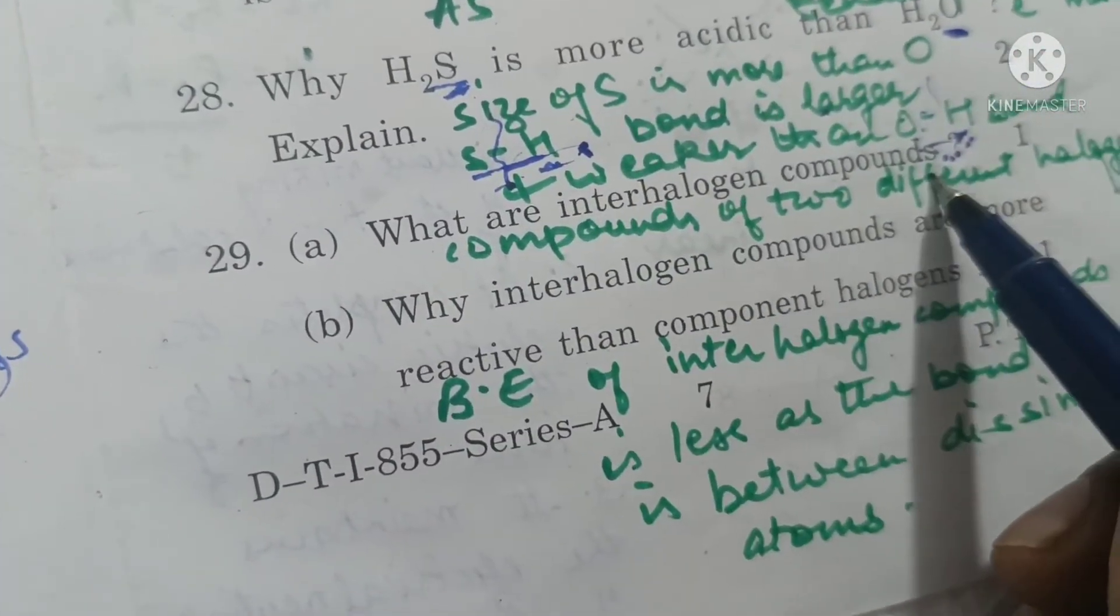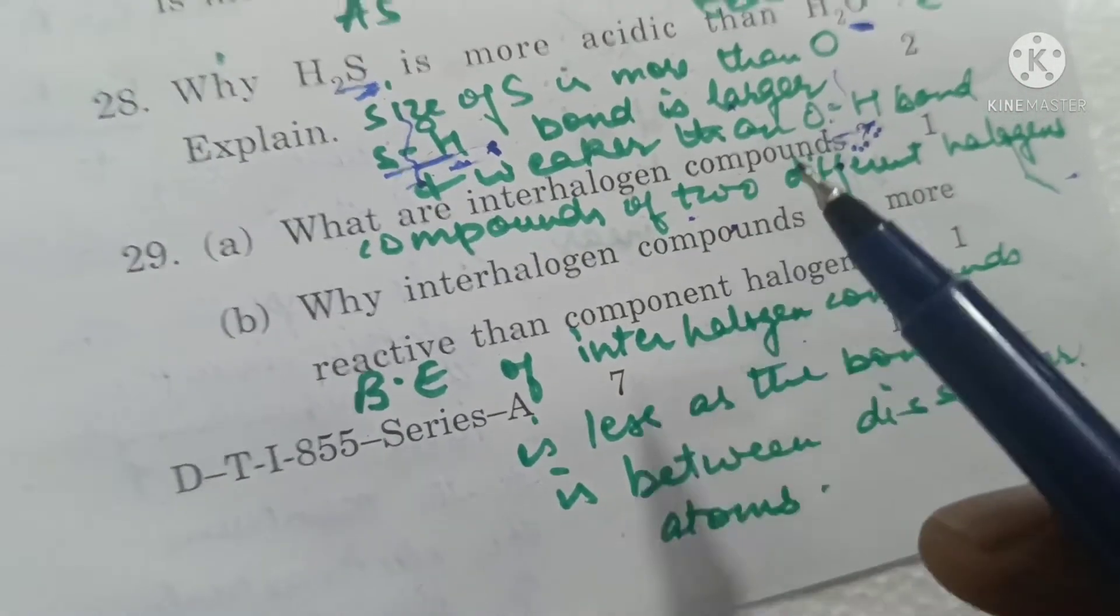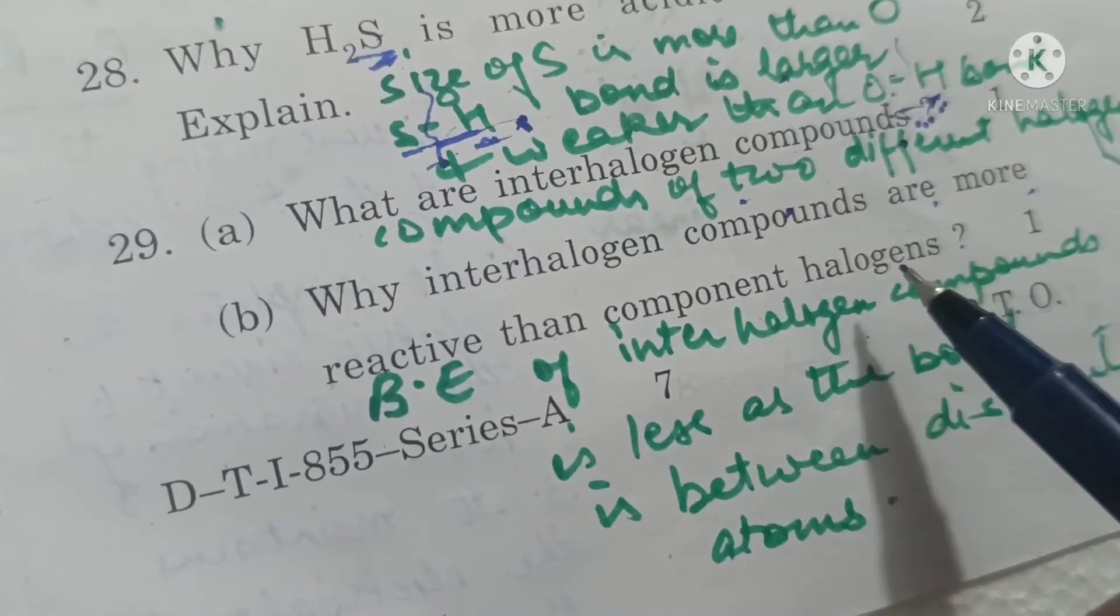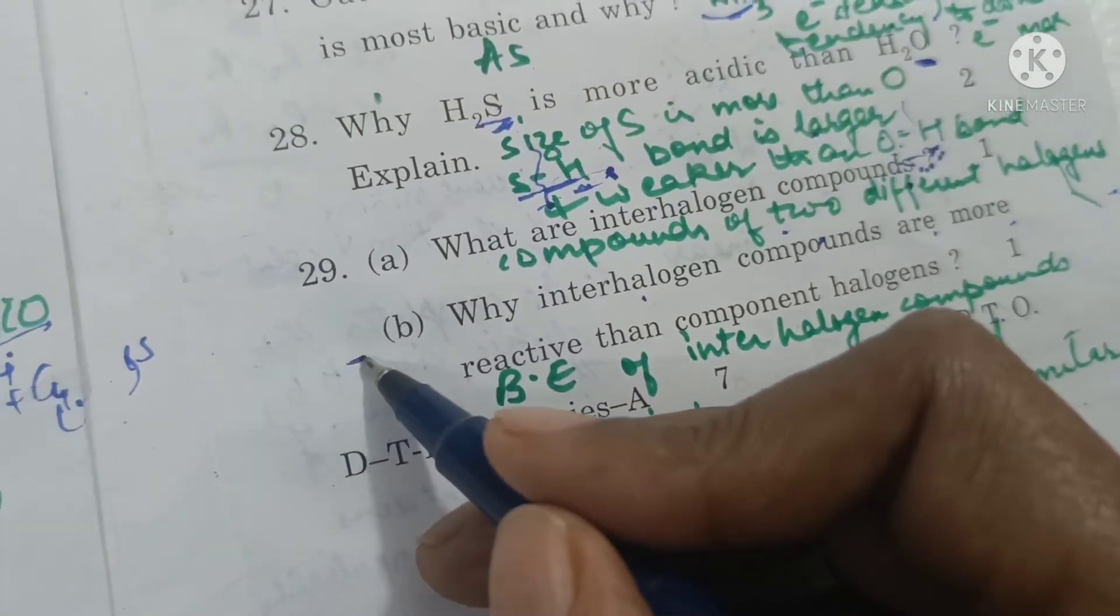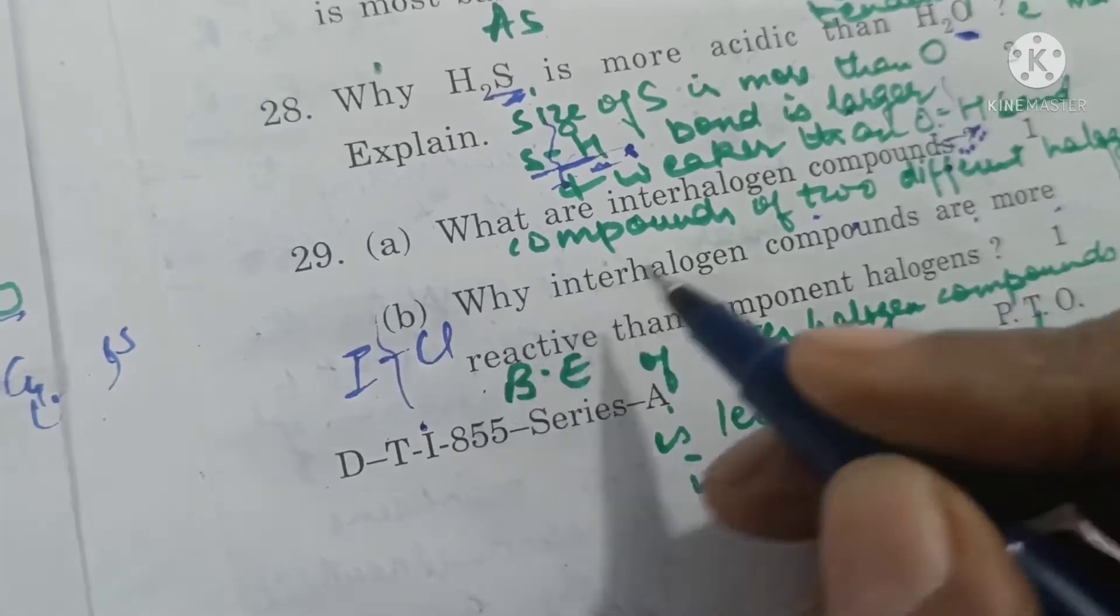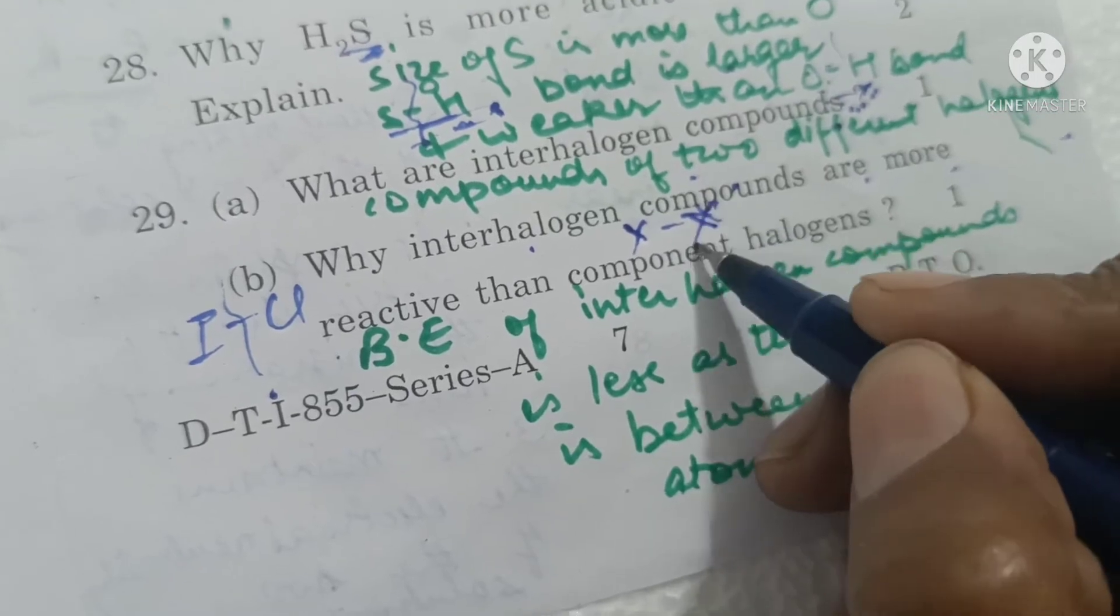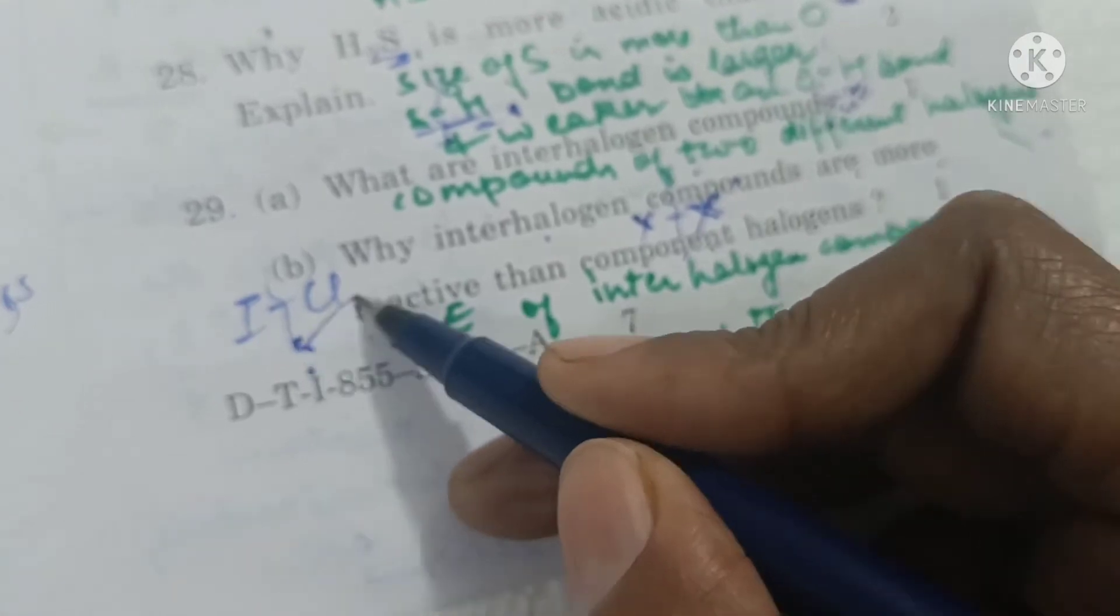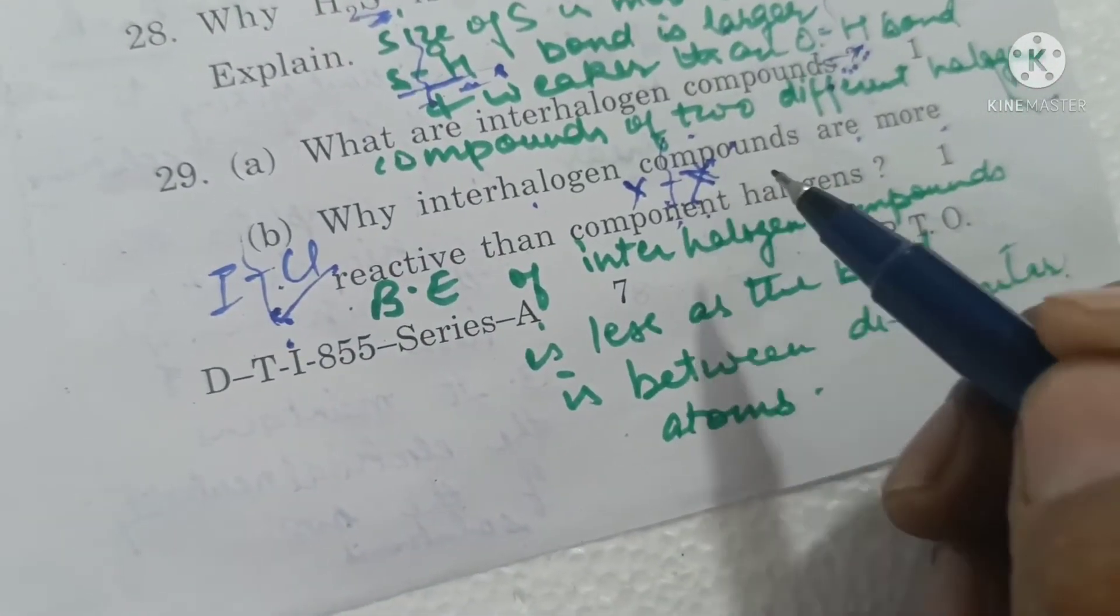What are interhalogen compounds? Compounds of two different halogens are called interhalogen compounds. Why are interhalogen compounds more reactive than component halogens? Because interhalogen compounds are made up of dissimilar atoms which are easier to break, whereas halogens contain similar halogen atoms which are comparatively less easier to break. Bond dissociation energy is less, so it is more reactive.